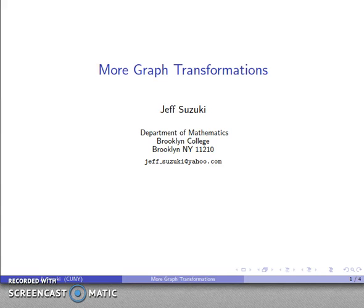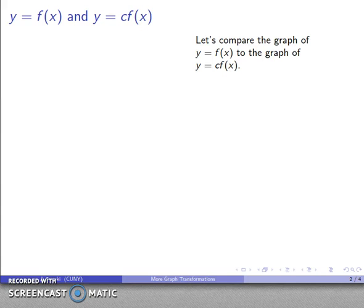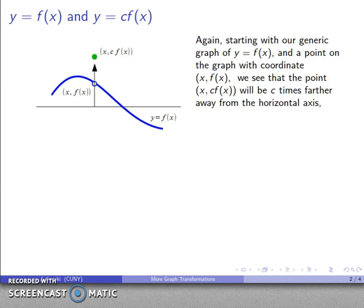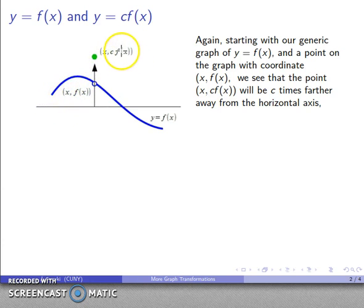There are a couple more graph transformations worth talking about. Let's look at the difference between the graph of y equals f of x and the graph of y equals c times f of x. Starting with a generic graph of y equals f of x, if I drop a point on the graph of y equals c times f of x, the x-coordinate stays whatever it is, while the y-coordinate becomes c times f of x.